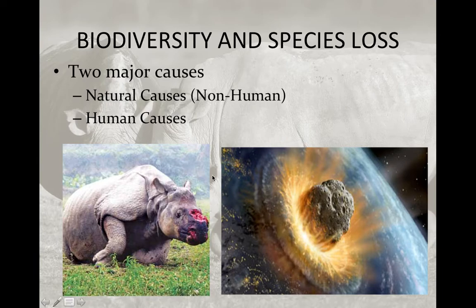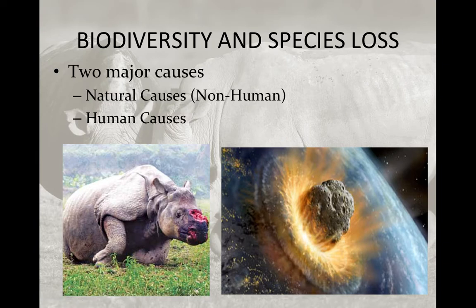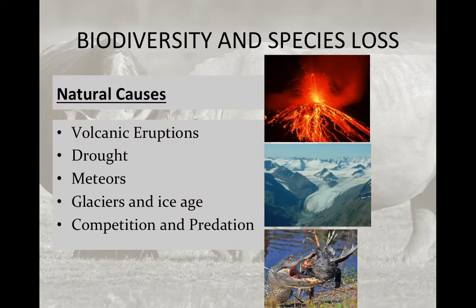That rhino is very unlikely to survive without human intervention — without its horn there is a high chance of infection spreading to the brain. This animal could be lost simply so someone can obtain a tiny amount for an unscientifically backed theory that grinding up and consuming a rhino's horn increases virility. This is one example of poaching, but there are several other examples of human causes that can result in species loss.